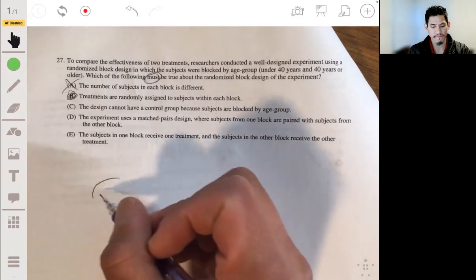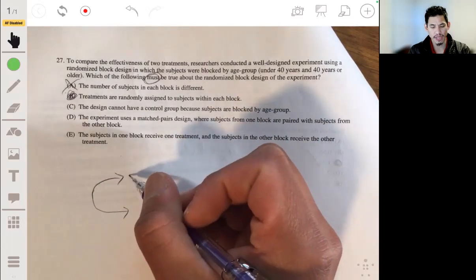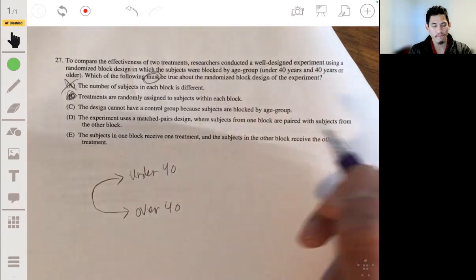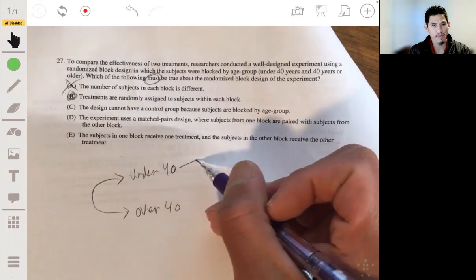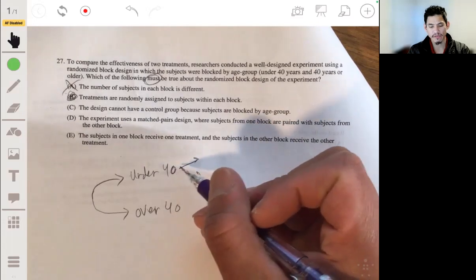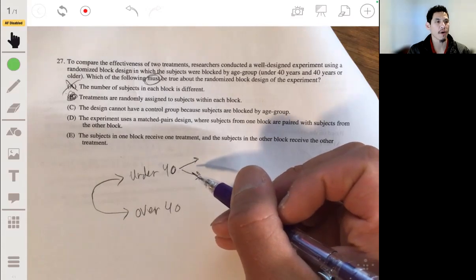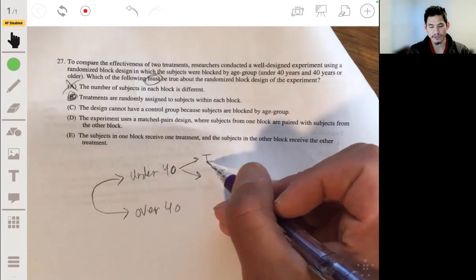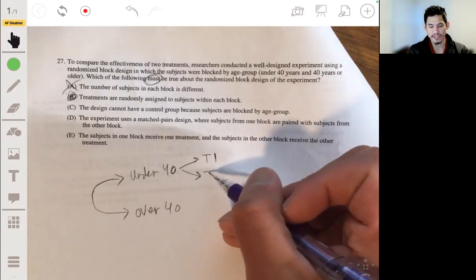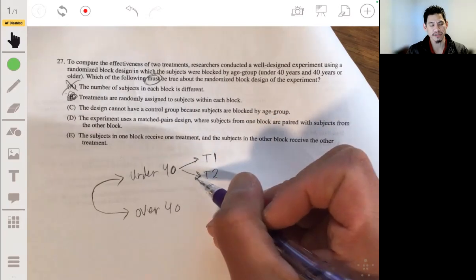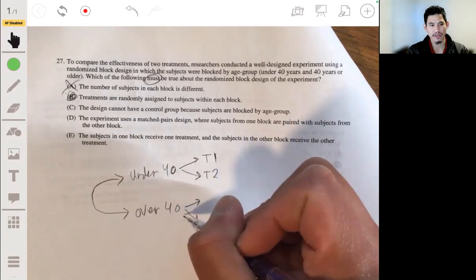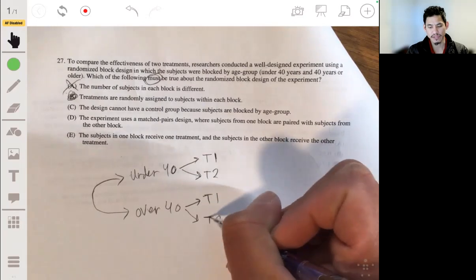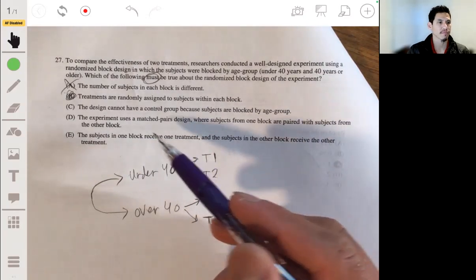So essentially you have your subjects broken into like block A. So let's say under 40, over 40. And then from here you split the under 40 group according to the treatment, but you randomly assign it. So maybe they get treatment one, let's say T1, and these subjects could get treatment two. And you do that same sort of thing for the other block. You randomly assign treatment one to some of the subjects and treatment two to the other subjects. So within each block, you're going to have random assignments.